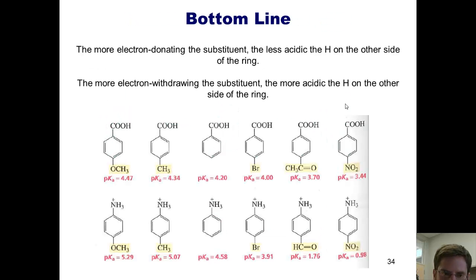So what's the bottom line? The more electron donating the substituent, the less acidic the hydrogen will be on the other side of the ring. The more electron withdrawing the substituent, the more acidic the hydrogen will be on the other side of the ring. We can see this trend being exhibited or exemplified by these various examples that I've taken from your book.